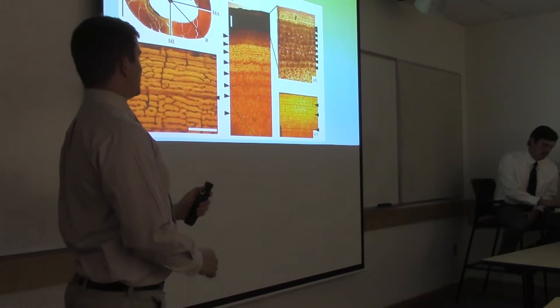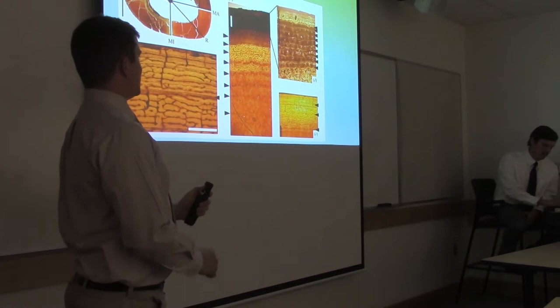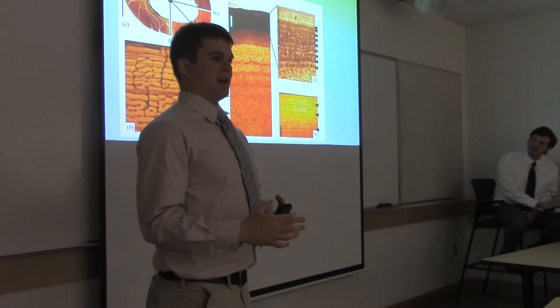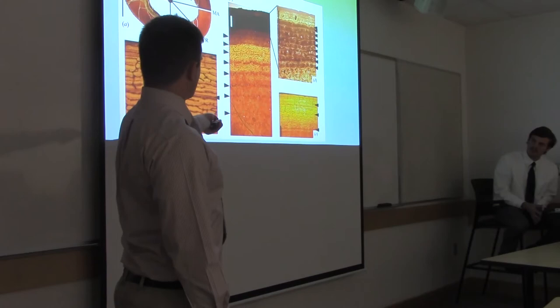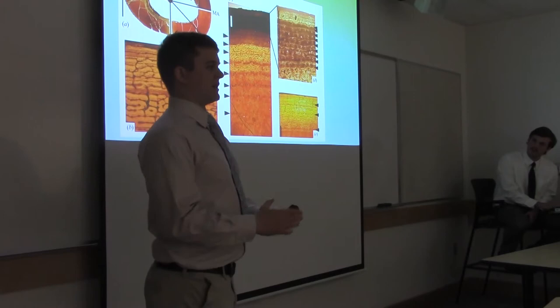So what we'll do to determine age are these things called growth lines. As an organism grows and develops, it goes through growth cycles. These are roughly—roughly one growth cycle is equal to one year. And it leaves an actual change in the structure of the bone. So when an animal is young, it goes through growth cycles, it goes through a period of rapid growth.